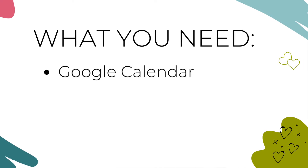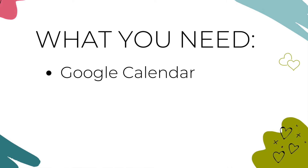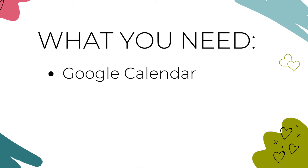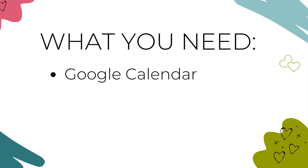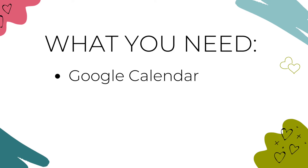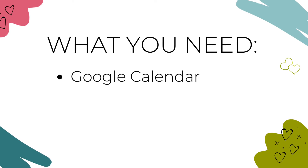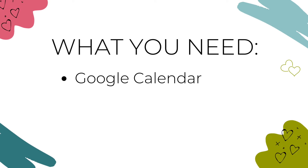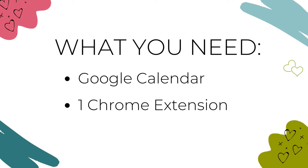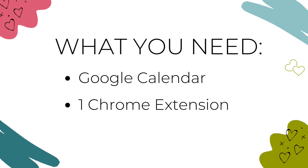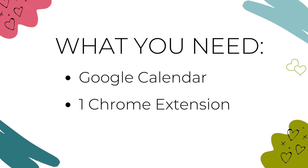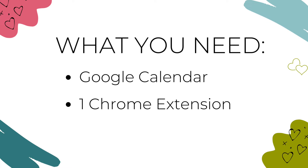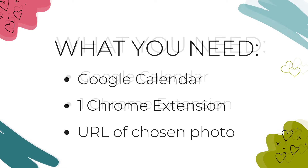There are just three things you need to add a custom background photo to Google Calendar, and best of all, they're all free. The first is Google Calendar. Second, you'll need the Custom Calendar Background Chrome extension. And third, you need the URL to whatever photo you'd like to use as your calendar background.